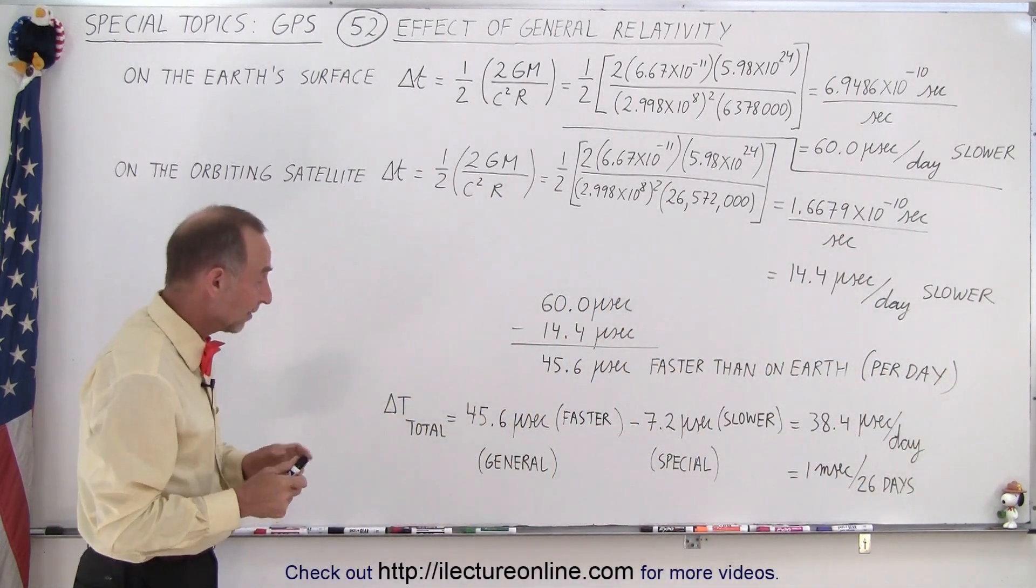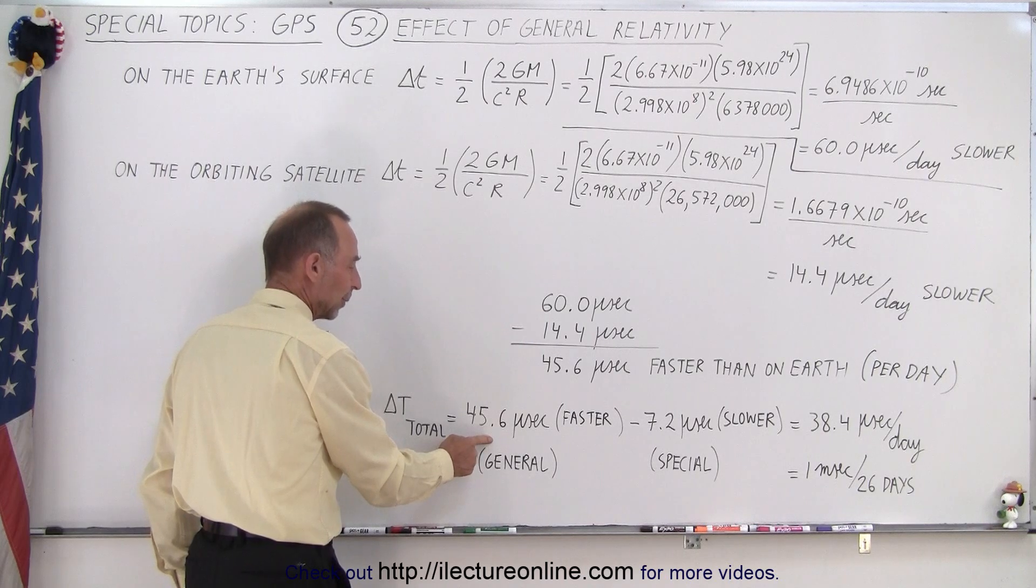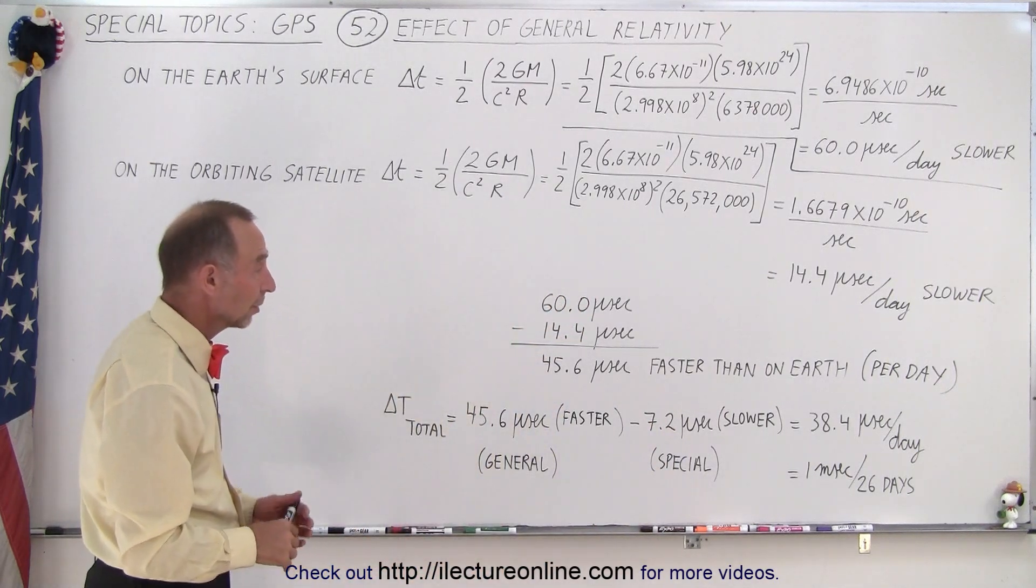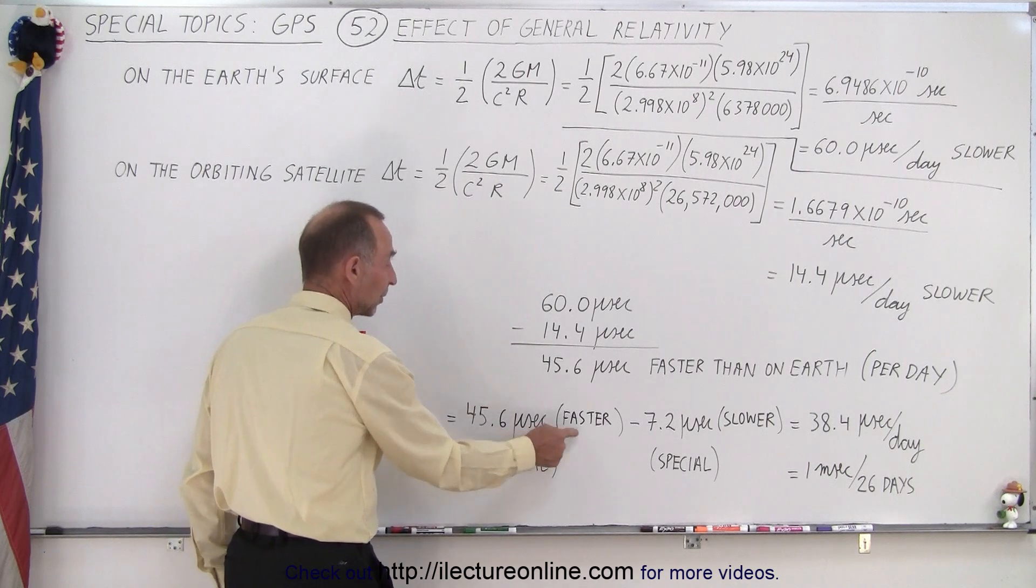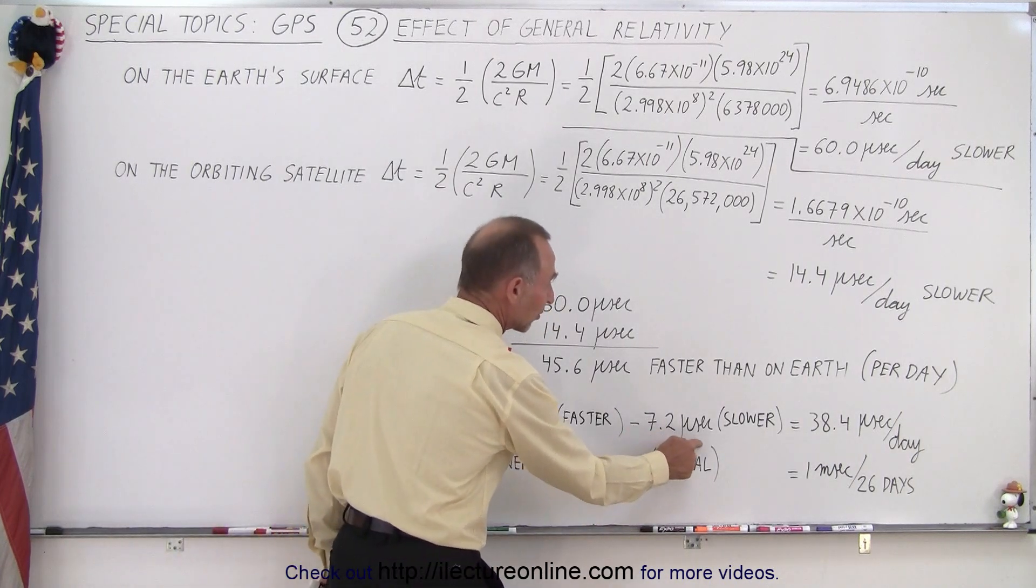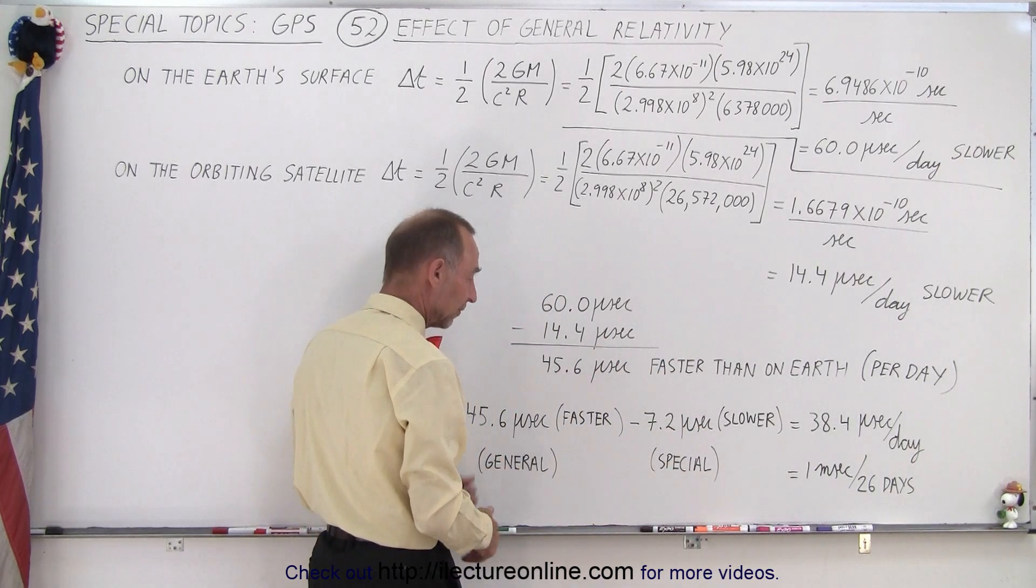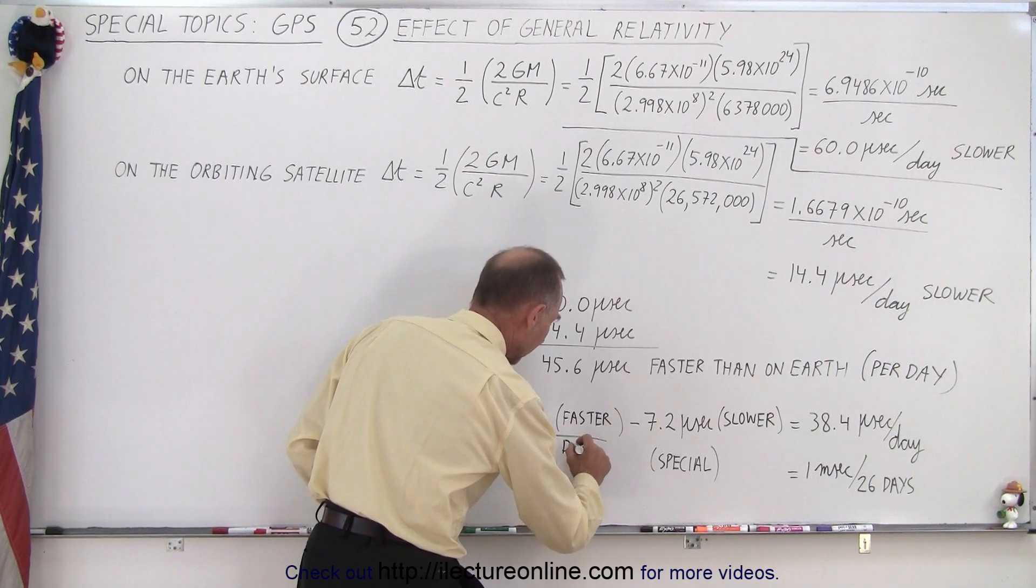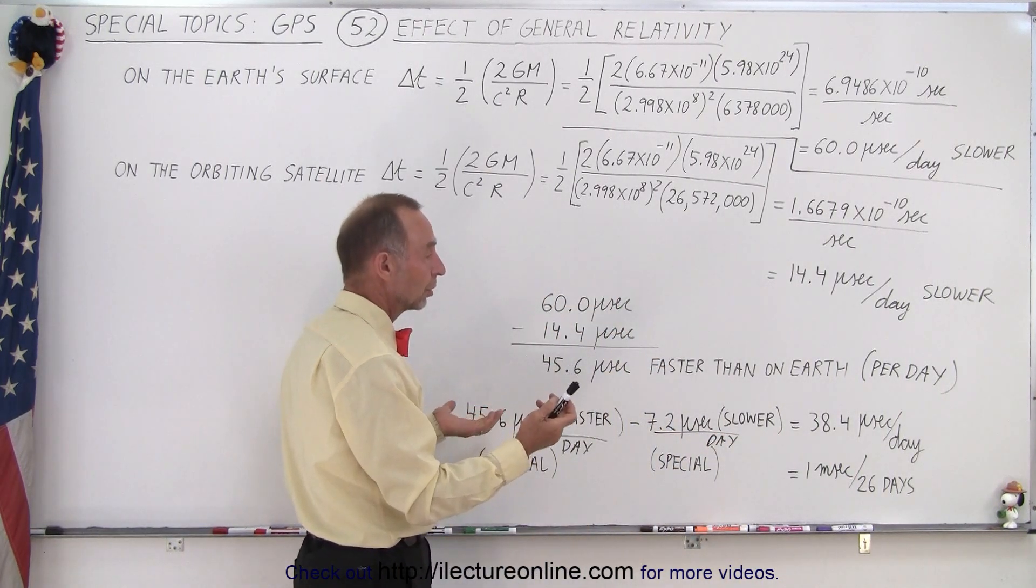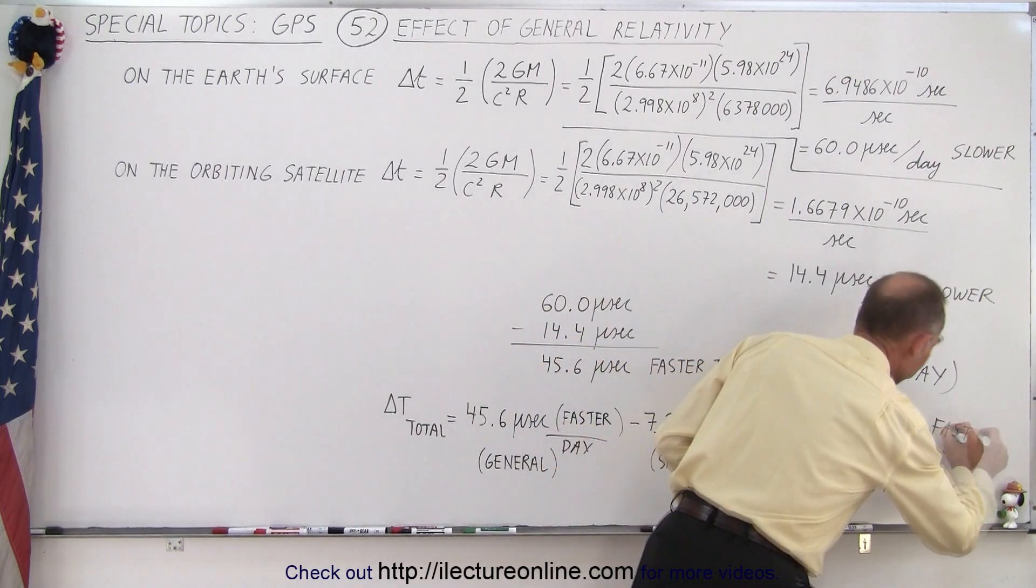And so what that means is that now we need to find the total difference in the time. The time difference caused by the general theory of relativity and the time difference caused by the special theory of relativity. We ended up at 7.2 microseconds slower per day. So the time runs 45.6 microseconds per day faster on the satellites compared to the Earth's surface due to the general theory of relativity and 7.2 microseconds per day slower due to the special theory of relativity. And that means that in total the clocks on the satellite will run 38.4 microseconds per day faster than the clocks on the surface of the Earth.